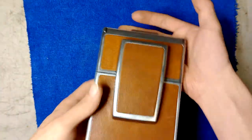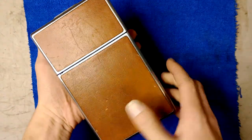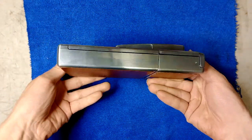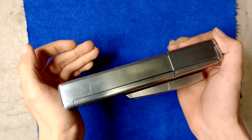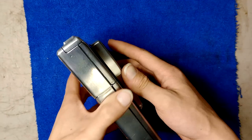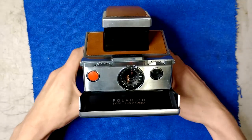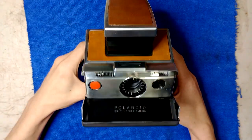All right, so today we have an SX-70 to repair. Here it is. It's in good shape, this shiny variant. Let's open it up and take a look. All right, so buttons there.